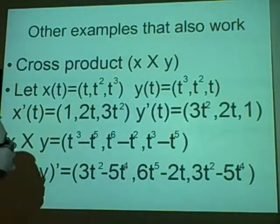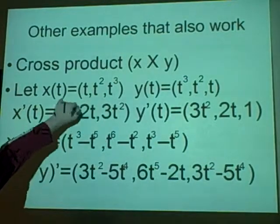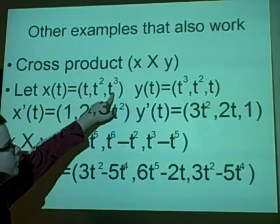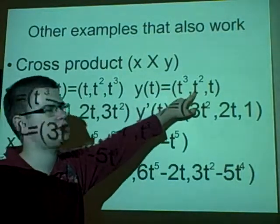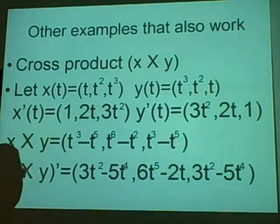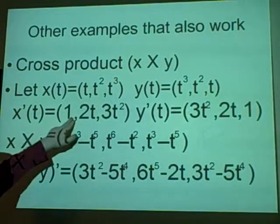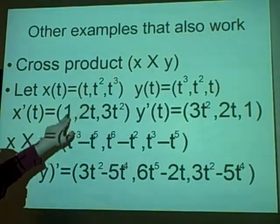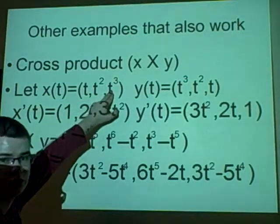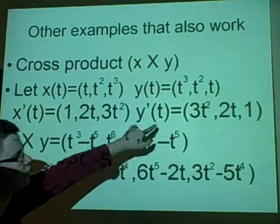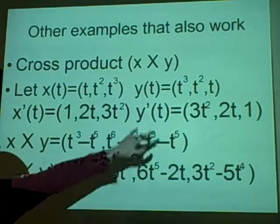Another thing you can do is prove the cross product. So we have our two vectors, we have x as (t, t², t³), and y as (t³, t², t). And if you want to find the derivative, the derivative of x is (1, 2t, 3t²) because of the t, 2t because of the t², and 3t² because of the t³. And it's similar for y as well, except it's in a different order because of the numbers we've picked.